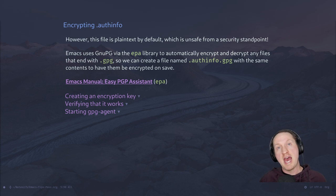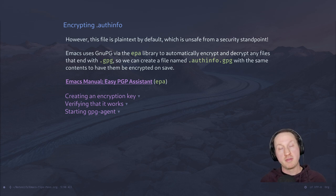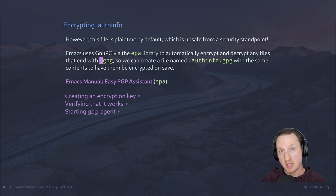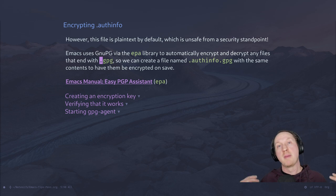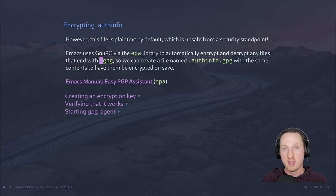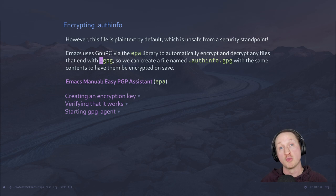The idea is that if your encryption key is set up correctly and you create a file with a .gpg extension, Emacs will automatically try to encrypt that file. When you try to reopen it, Emacs will decrypt it automatically. It's very transparent in how it handles encrypted files. That's how the authinfo.gpg file works — it's the same format, but instead of .authinfo you have .authinfo.gpg, and it gets encrypted and decrypted whenever you try to read a password from it.